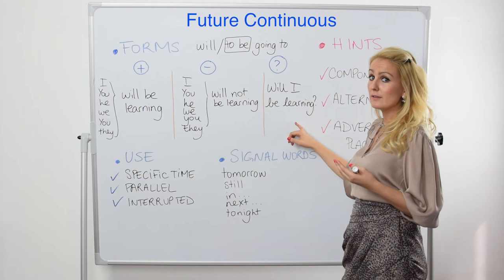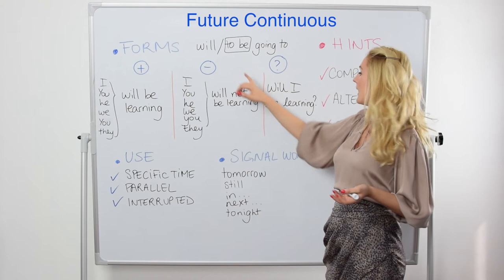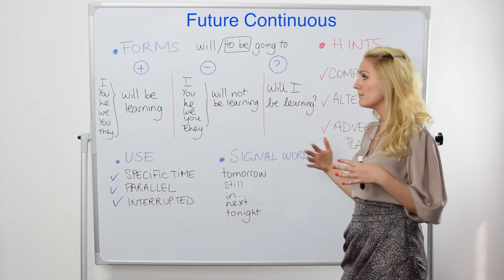And the question form: 'Will I be learning?' If it's negative: 'Won't I be learning?' or 'Will I not be learning?' With 'to be': 'Am I going to be learning?' 'Am I not going to be learning?' or 'Aren't I going to be learning?' So many options.